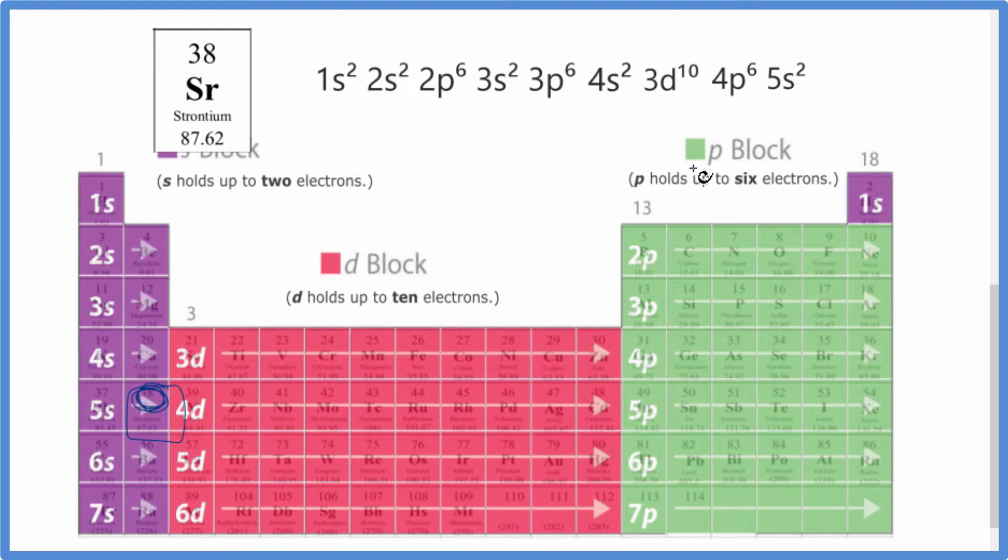1s1, 1s2, s only holds 2, so that's full. 2s1, 2s2, that's full. 2p1, 2, 3, 4, 5, 6, and it's full. So we put 2p6.